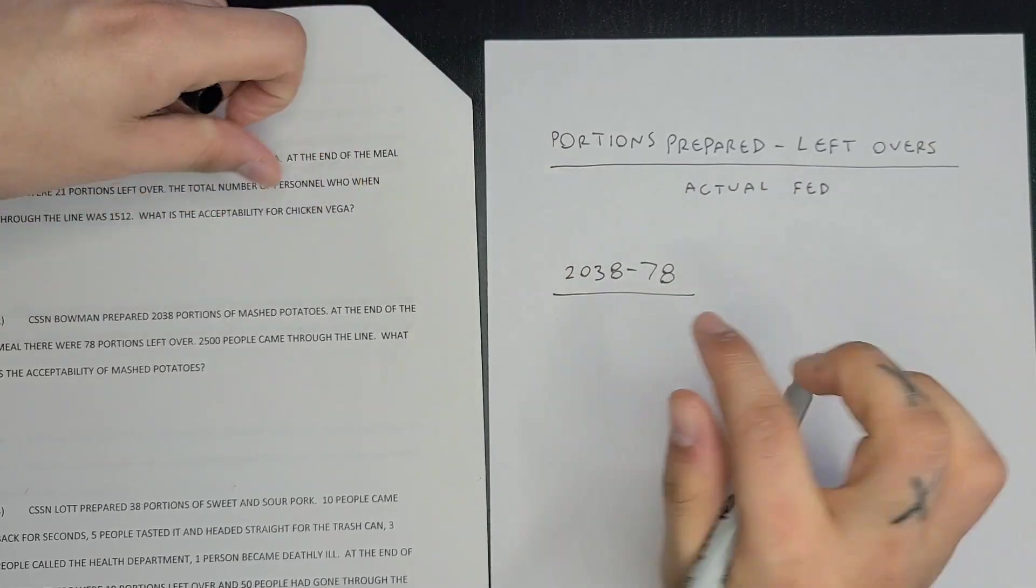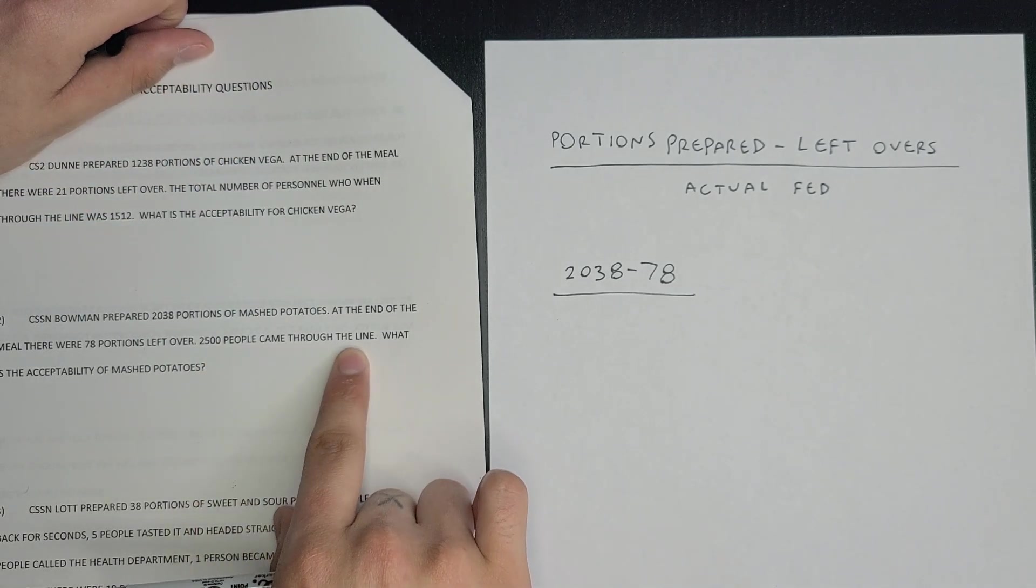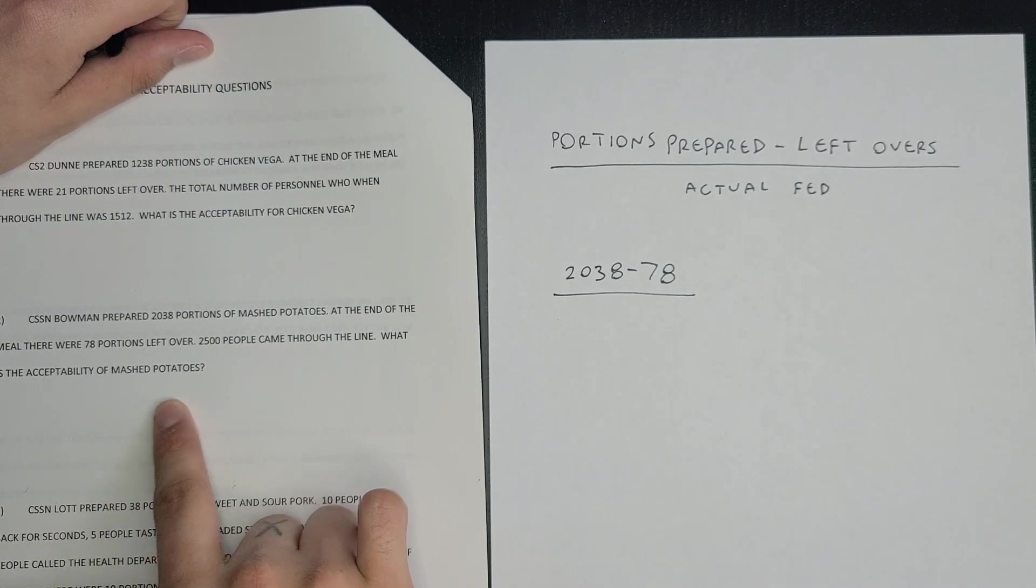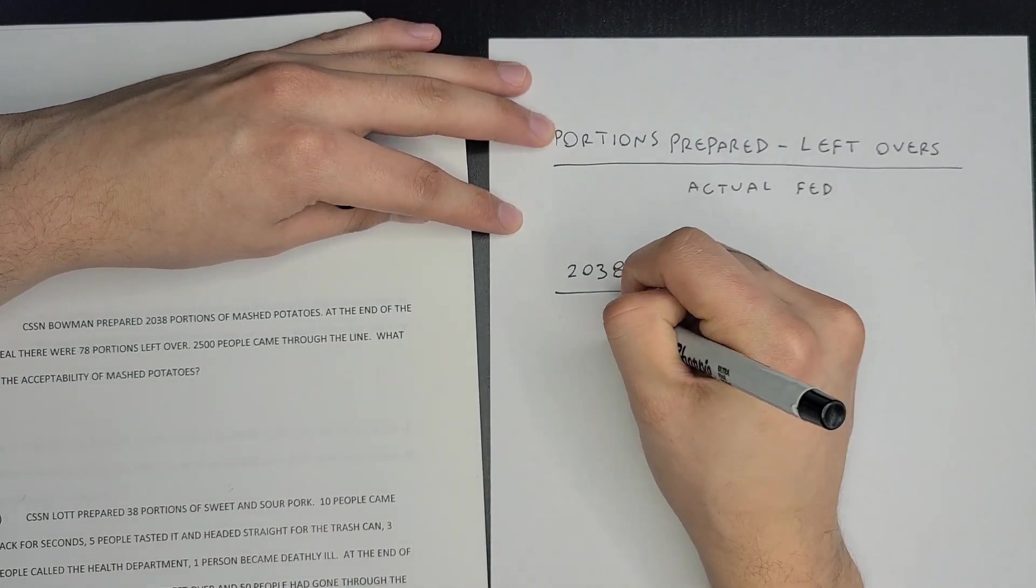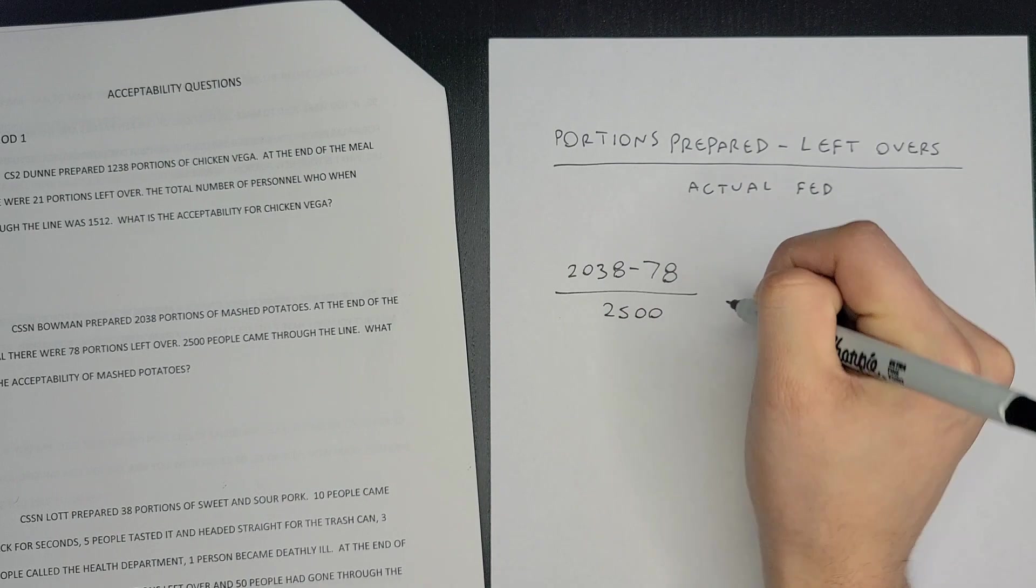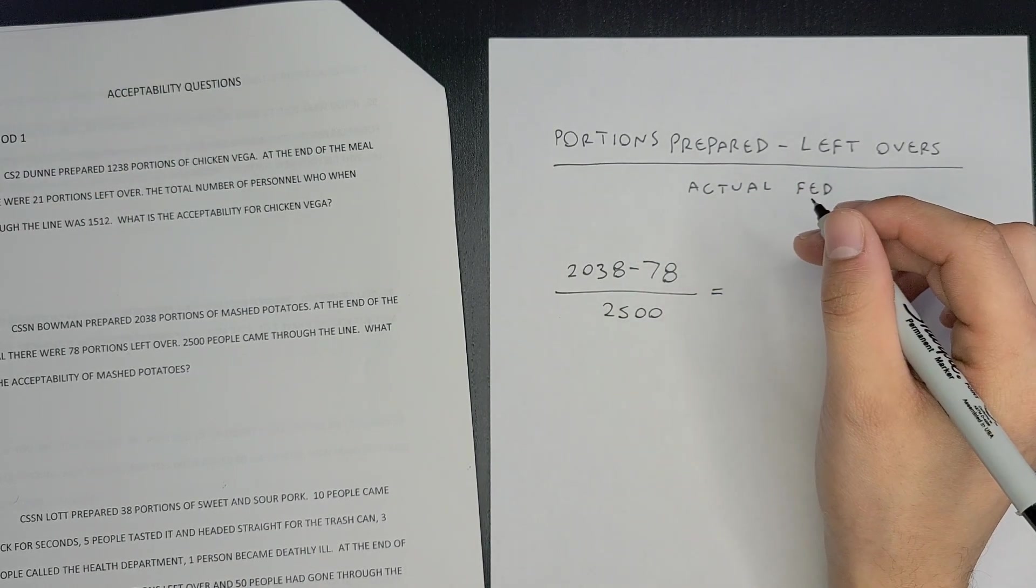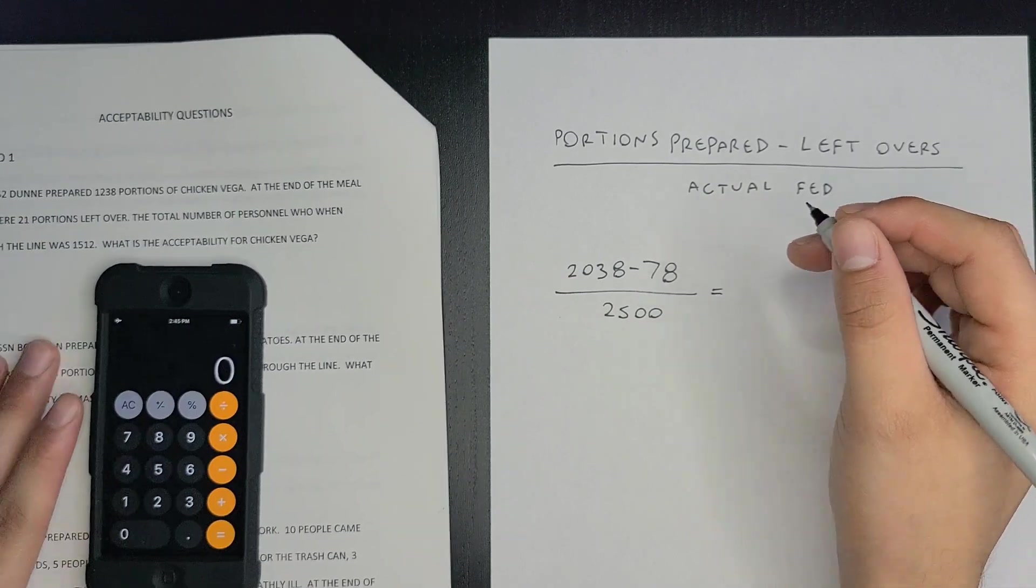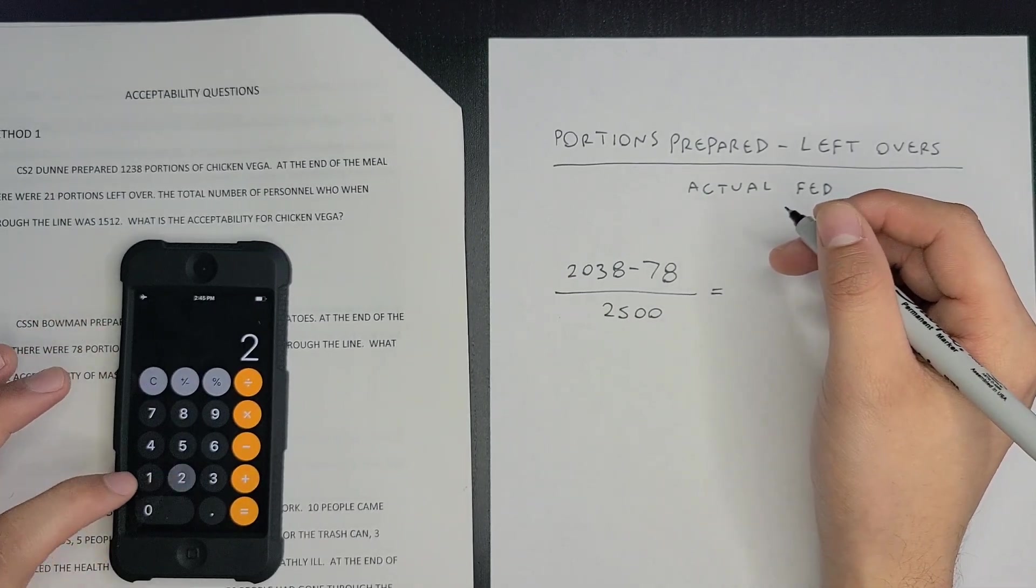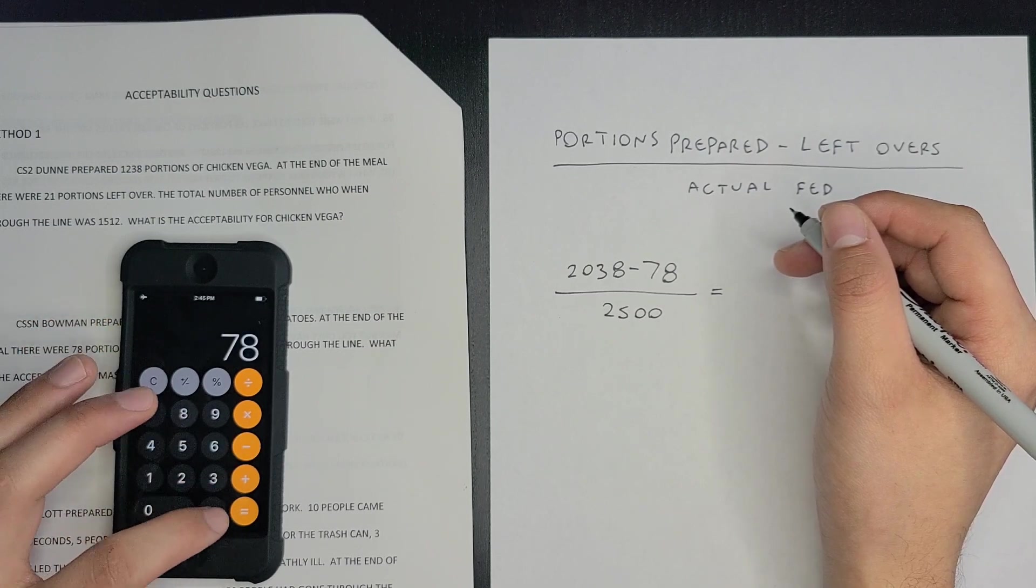Divided by 2500—2500 people came through the line. What is your acceptability of mashed potatoes? First, you're going to subtract the top two numbers: 2038 minus 78, which